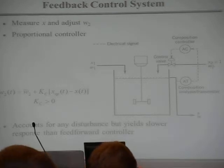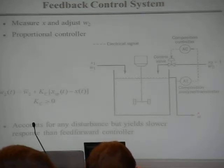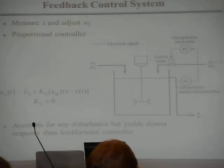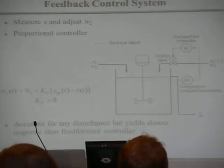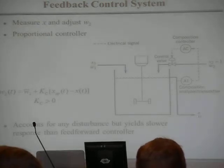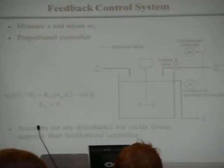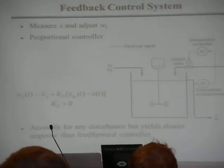That limits our search for Kc to between zero and plus infinity, which is still quite large, so I'll teach you exactly how to choose it using a model. The nice thing about this feedback approach is it doesn't matter what causes X to change from the set point — you'll compensate for it. It could be X1 changing, W1 changing, or anything. You pay the price that it might be a little slow — you have to wait to see the effect before you can compensate. But it'll compensate for all possible problems. This is what I call feedback control, and it's the main focus of the course.